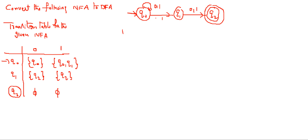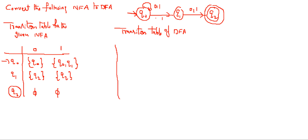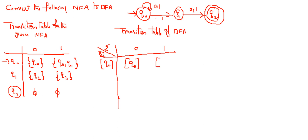Now we will write the transition table for the DFA. Initially you have to start with Q0, since Q0 is the initial state of the NFA, it will be the same initial state for the DFA also. If you apply 0 on Q0, you are going to Q0 only, as per the NFA transition table. If you take 1 on Q0, you are going to Q0 and Q1, which is a new combined state.